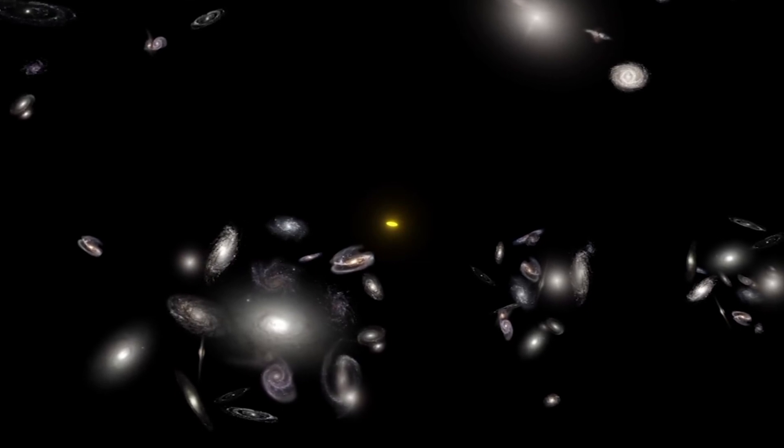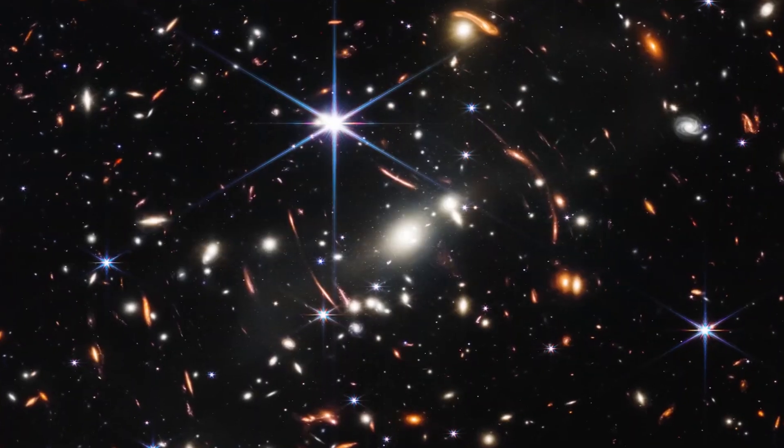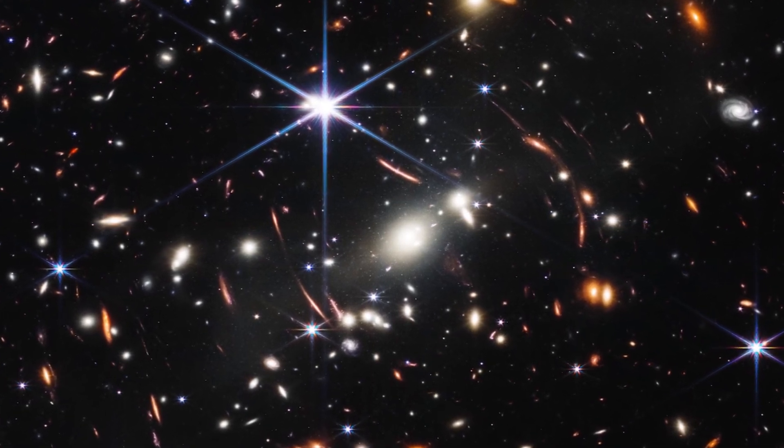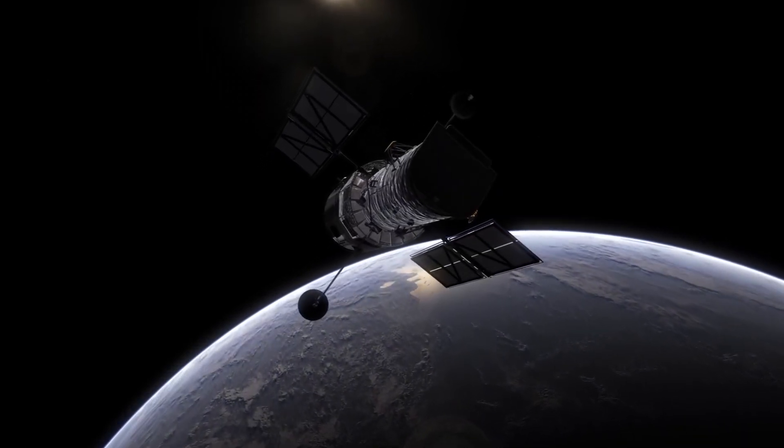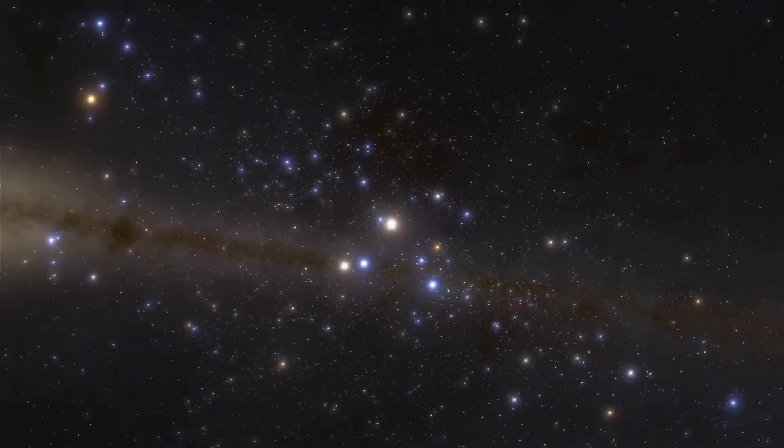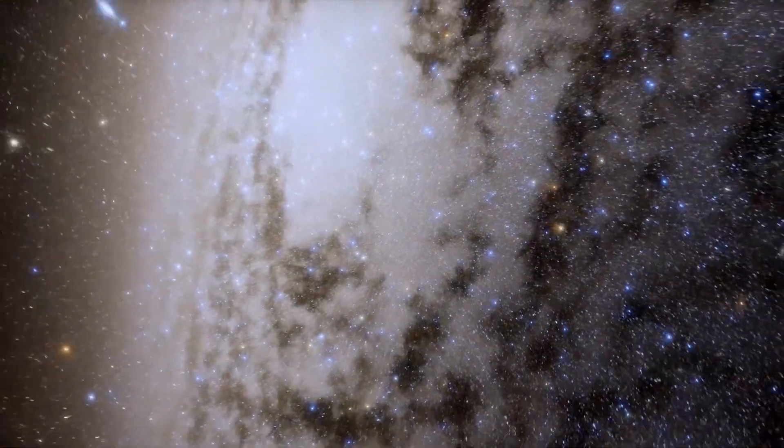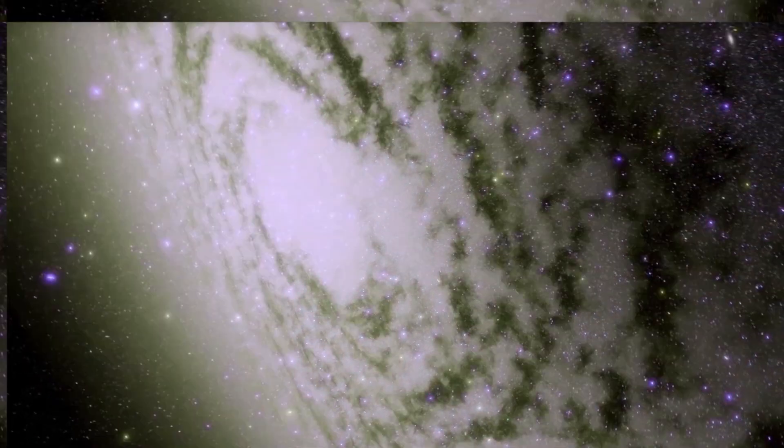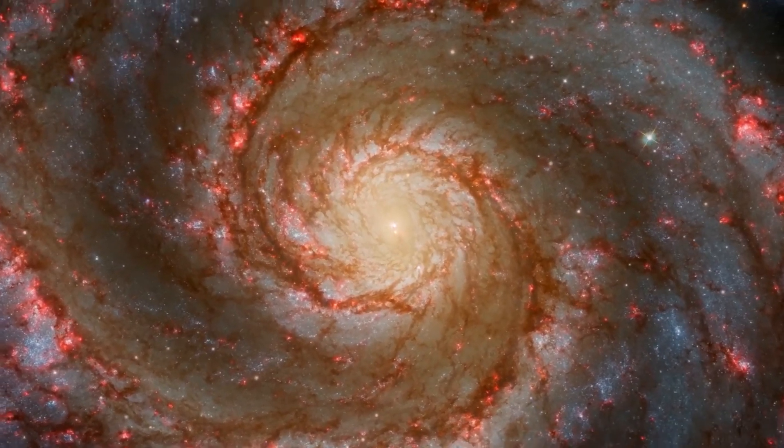The fact that the observed galaxies are two to three times smaller than similar galaxies imaged by the Hubble Space Telescope completely defies the expected behavior in an expanding universe. According to the hypothesis, as the universe expands, objects should appear larger as distance increases. However, these James Webb observations show galaxies that defy that expectation.